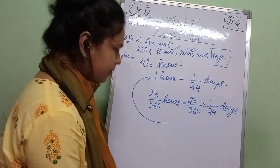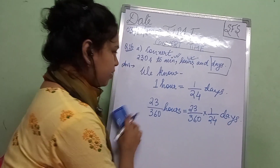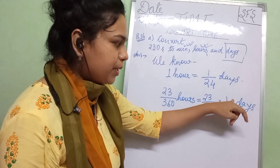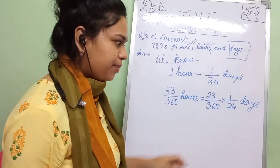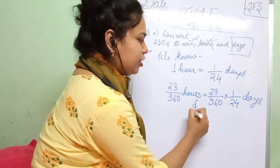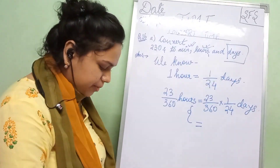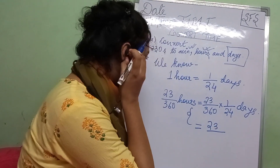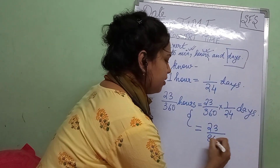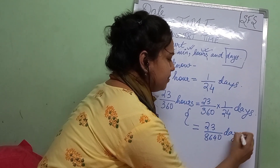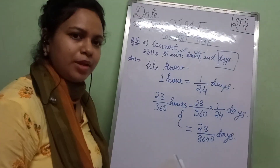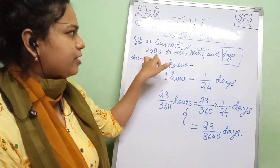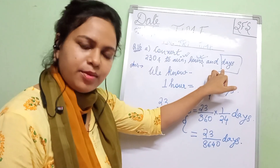23 by 360 hours will be equal to 23 by 360 into 1 by 24 days. You multiply 23 with 1 and 360 with 24. After multiplication, the answer is 23 by 8640 days. So what did we do? We converted 230 seconds to minutes, hours, and days.